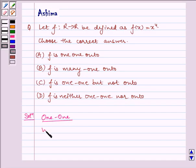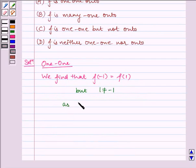We find that f of minus 1 is equal to f of 1, but 1 is not equal to minus 1, as f(x) equals x to the power 4. Thus, f is not one-one.